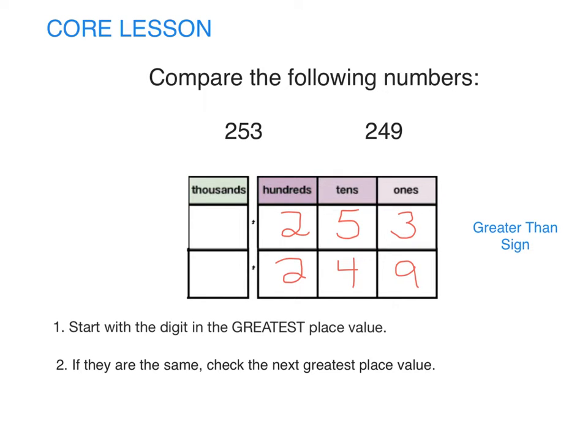We use a greater than sign to show if the first number is bigger than the second number. A greater than sign kind of looks like an alligator with its mouth open to the left. Yum! What a good catch! 253 is greater than 249.